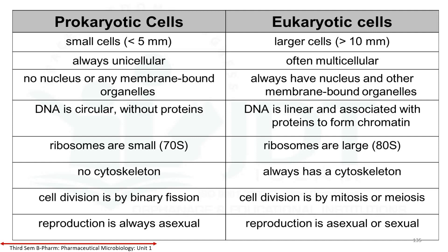Eukaryotics always have a nucleus and other membrane-bounded organelles. In prokaryotics, DNA is circular without histone proteins. In eukaryotic cells, DNA is linear and usually associated with histone proteins to form chromatin, which is organized into chromosomes.